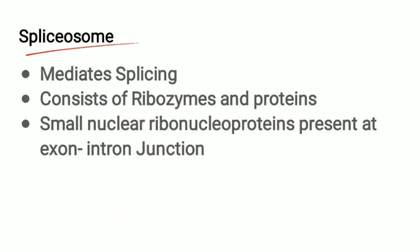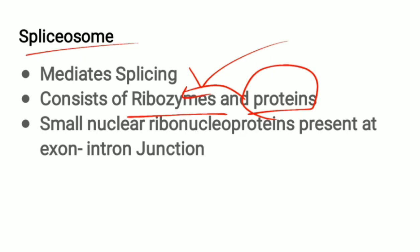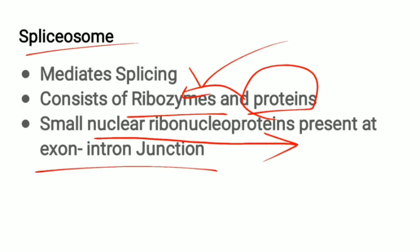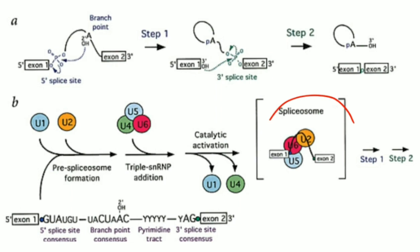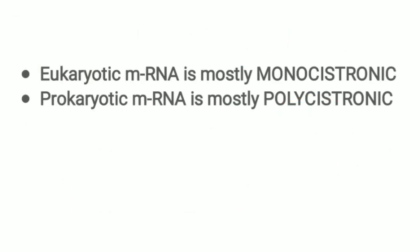The spliceosome mediates the splicing process. It consists of ribozymes — RNA molecules that act as enzymes — and proteins that stabilize these ribozymes. Spliceosomes are small nuclear ribonucleoproteins (snRNPs) present at the exon-intron junction, and they are uracil-rich.